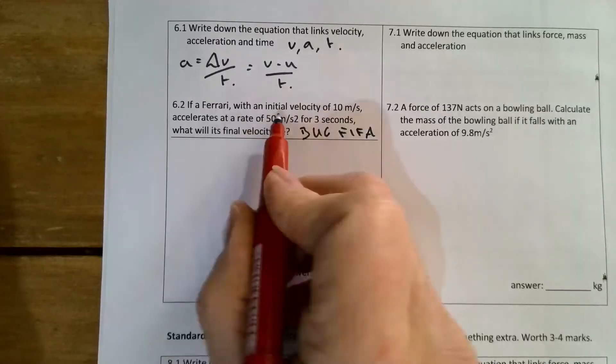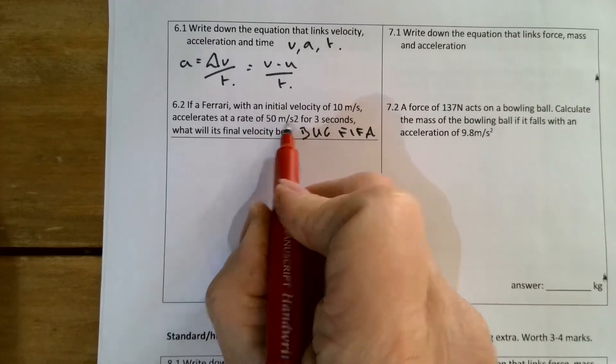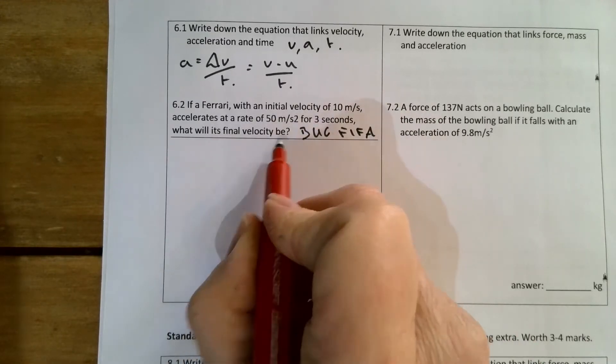If a Ferrari with an initial velocity of 10 meters per second accelerates at a rate of 50 meters per second squared for three seconds, what will its final velocity be?